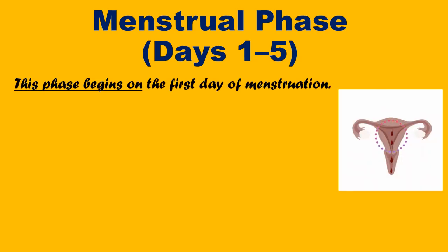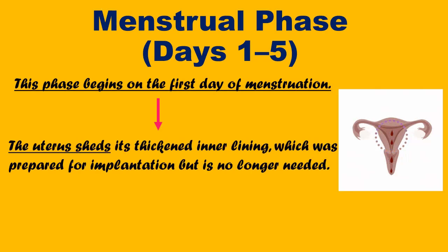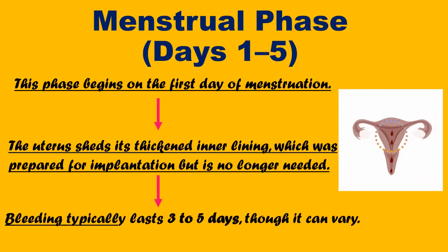Phases of the menstrual cycle. The menstrual cycle is divided into four phases, each regulated by hormonal changes. Menstrual phase, days 1 to 5: this phase begins on the first day of menstruation. The uterus sheds its thickened inner lining, which was prepared for implantation but is no longer needed. Bleeding typically lasts 3 to 5 days, though it can vary.